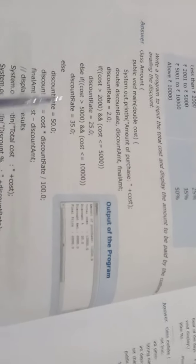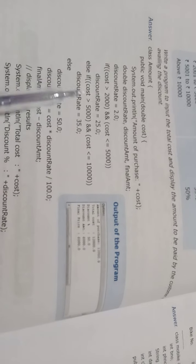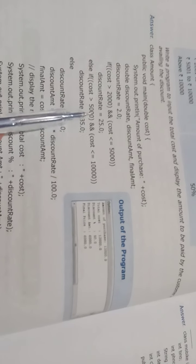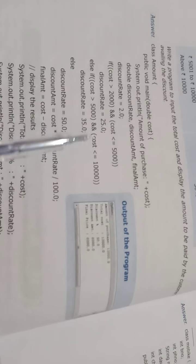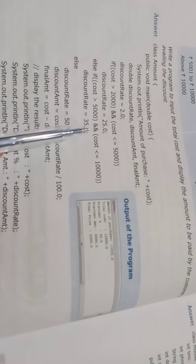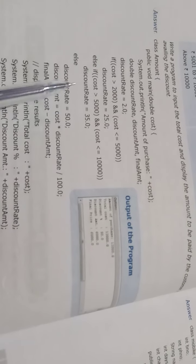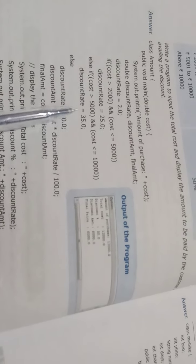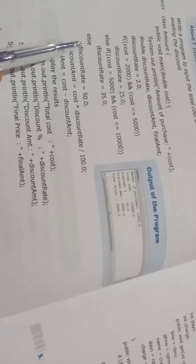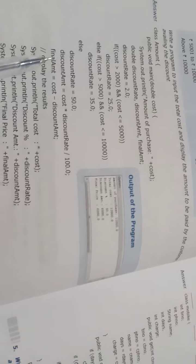Agar cost greater than 2000 hai aur less than or equal to 5000 hai, to discount rate hoga 25% — jo yahan pe diya hai. Else if cost is greater than 5000 aur cost is less than or equal to 10,000, to discount rate hoga 35%. Phir else discount rate hoga 50%. Hamare paas 4 criteria hain.